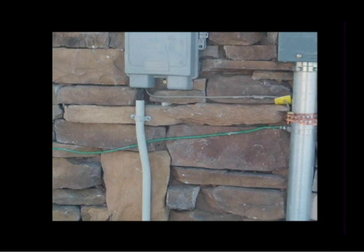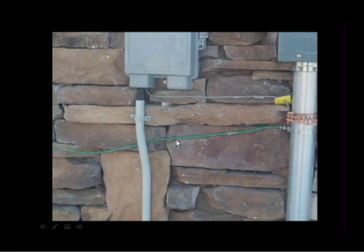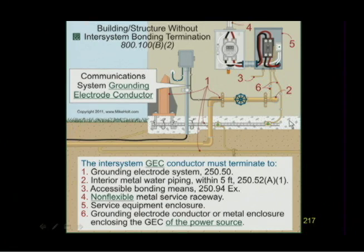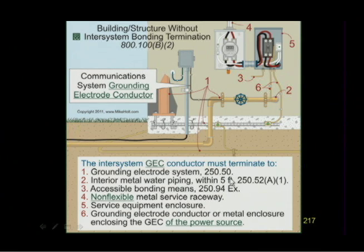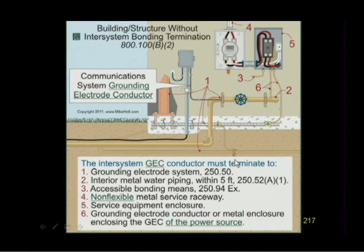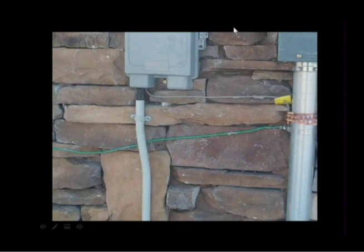Here's an example photo — no inter-system bonding terminal, existing installation. You simply run over to the building service raceway. Options include: the grounding electrode system, interior metal water piping within five feet of entry, accessible bonding means, or non-flexible metal service raceway. That graphic shows option number four — the service raceway. That's one way to do it.